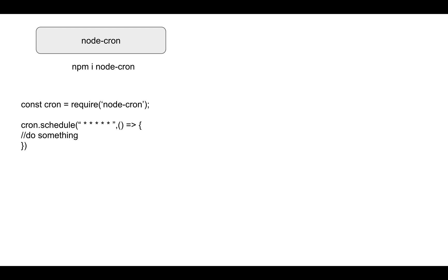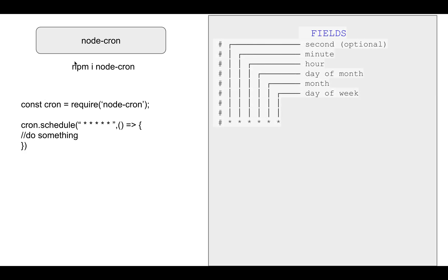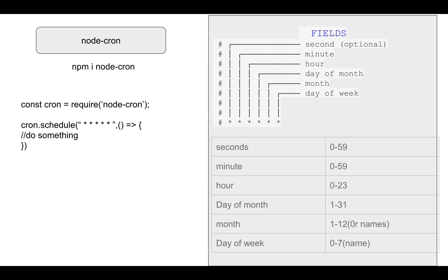In the time field, we have five stars. The first one is for seconds — it's optional, you do not have to write it. The second one is for minutes — you can write the minute value; if you want to execute your job every minute, the value range is 0 to 59. Then we have hours and day of month, then month, and after that day of week. For seconds, as I said, the value is 0 to 59, same for minutes. For hours, you can pass the value 0 to 23.